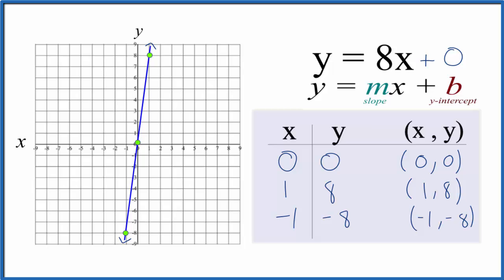So for b, the y-intercept, that's where we're going to cross the y-axis, and that is at 0. So right here we'll go to 0, and yep, that's where we cross the y-axis.